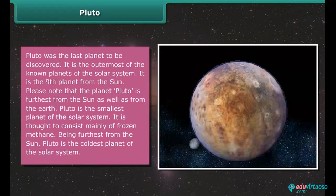Pluto. Pluto was the last planet to be discovered. It is the outermost of the known planets of the solar system. It is the ninth planet from the sun. Please note that the planet Pluto is the farthest from the sun as well as from the earth. Pluto is the smallest planet of the solar system. It is thought to consist mainly of frozen methane. Being farthest from the sun, Pluto is the coldest planet of the solar system.